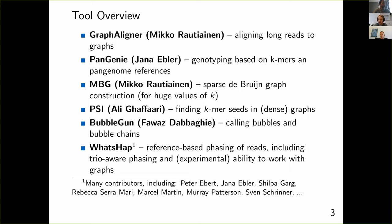Other tools we've worked on include MPG by Mikko Rautiainen, for constructing sparse de Bruijn graphs — Mikko observed there are very few tools that can work well on large values of k, such as k=2000, where tools designed for k=30 or 50 start to break. We also have a library called PSI for finding k-mer seeds in graphs without the exponential explosion of paths. Farwas made a bubble-calling tool called BubbleGun, and there's WhatsHap for phasing, which also has some graph capabilities.